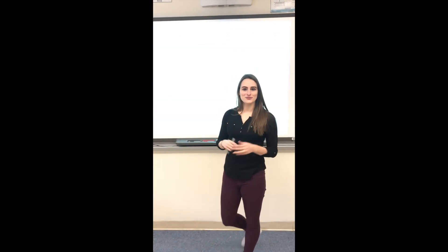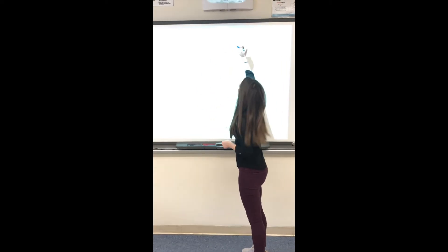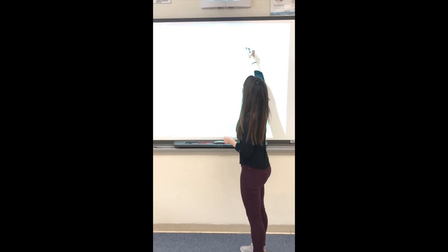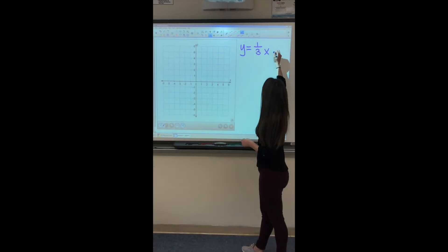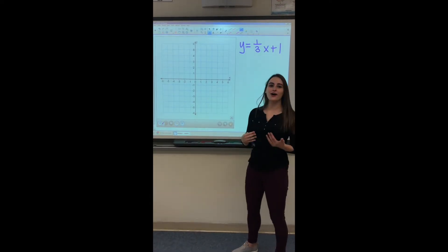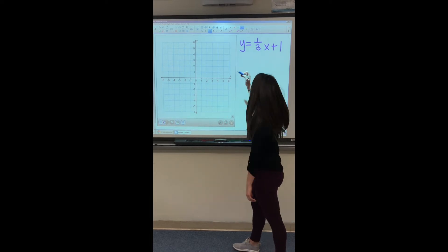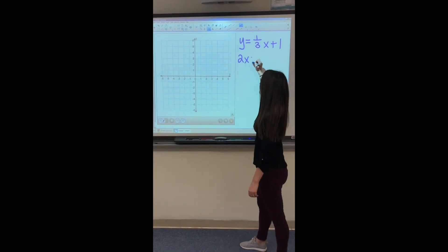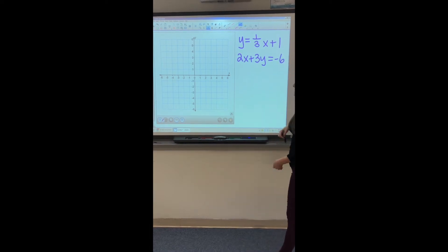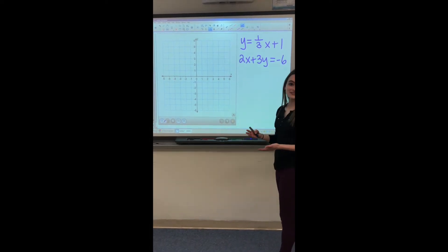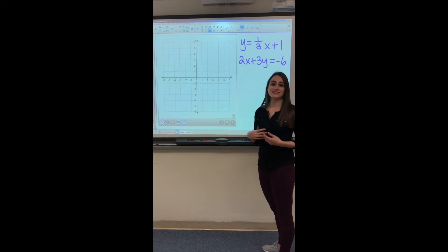So now we're going to look at a second example that's not as cut and dry as our first one. So we're going to look at two equations: y equals 1 third x plus 1, and then we're going to look at another equation that's not already in slope intercept form. So we're going to look at 2x plus 3y equals negative 6. So we have one equation that's in slope intercept form, we have the second equation that's in standard form.